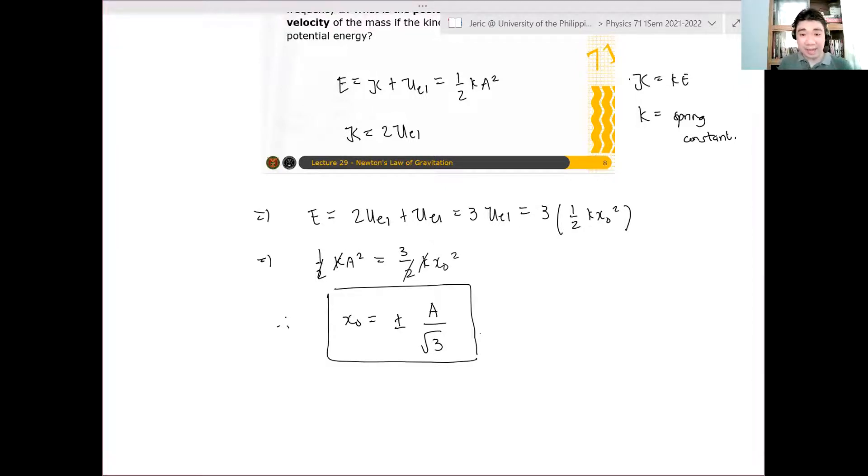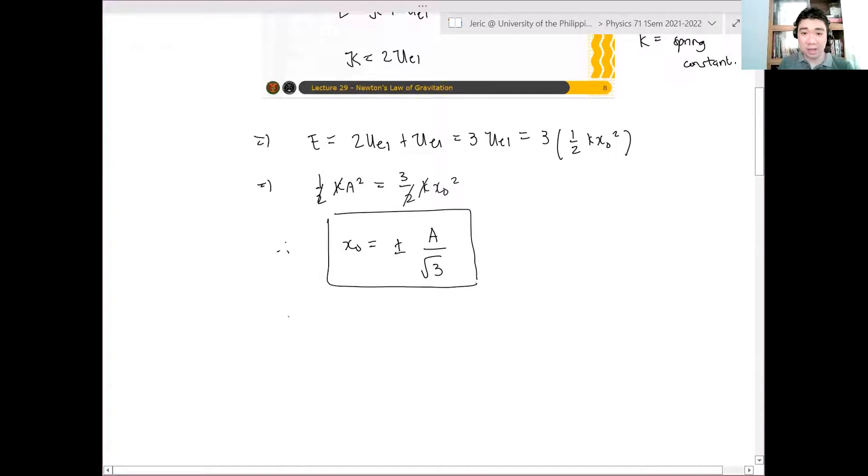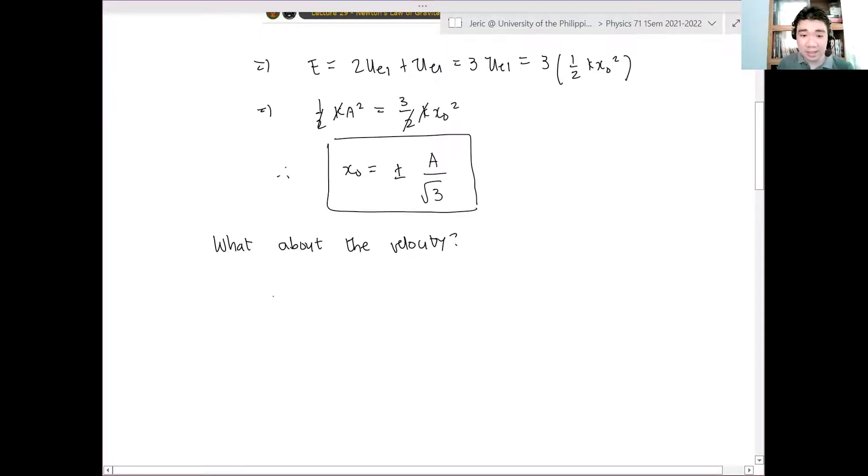And then after that, we also have the kinetic energy, the velocity. What about the velocity? Recall that the velocity is just equal to omega square root of A squared minus x squared. So v naught is omega times A squared minus x naught squared.